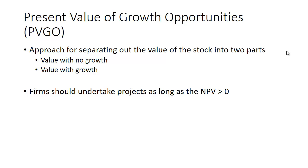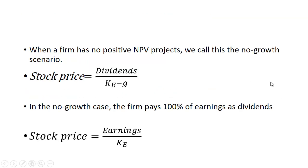We know that firms should undertake projects as long as the NPV is greater than zero, because positive net present value projects add value to the firm. So we want to do those when we have them. Now what happens if the firm has no positive NPV projects? Well, this is really what we call the no growth scenario. So the stock price is going to equal dividends divided by the cost of equity minus the growth rate of dividends.